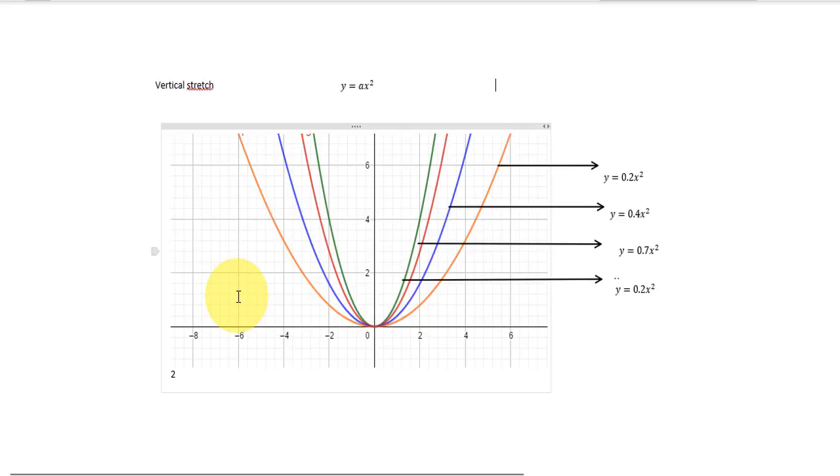Let's see an example of vertical stretch. We continue with y = ax². But now, instead of increasing the value, we decrease it. Starting from the parent function y = x², what happens if I write values less than 1, like 0.7, 0.4, or 0.2?